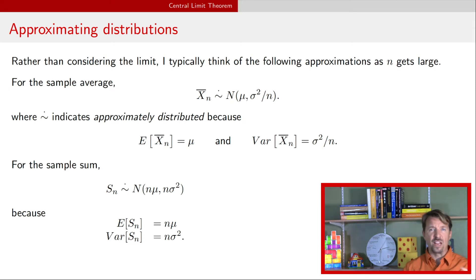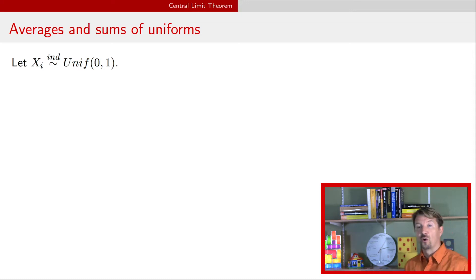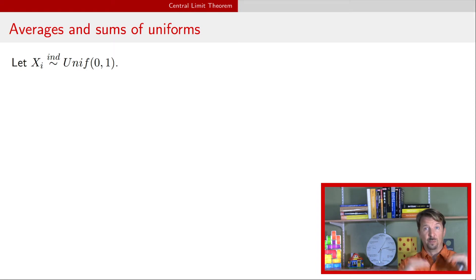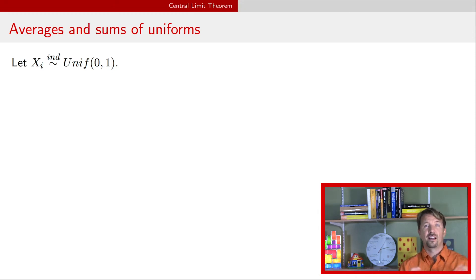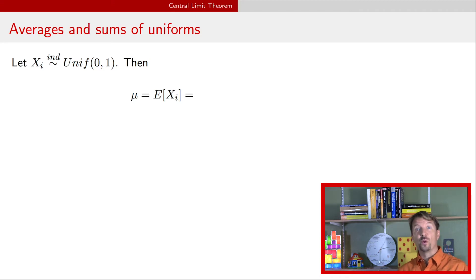Let's show a couple of examples using random variables that you know. Probably the least normal-looking distribution is a uniform random variable — in particular, we're using a standard uniform random variable here. As a reminder, a uniform distribution has a flat probability density function between its upper and lower endpoints, that is between zero and one. It looks nothing like the bell-shaped curve that has a single mode, is symmetric around that mode. So this doesn't really look like a normal distribution at all. And yet, when we take sample averages and sample sums, we're going to get something that looks like a normal distribution.